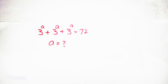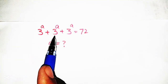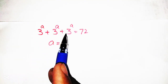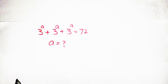Hello guys, welcome to my channel Olympiad Edge. Today we are going to solve a nice algebraic expression. Our today's given equation is 3 raised to a, plus 3 raised to a, plus 3 raised to a, is equal to 72, and we have to find the value of a.